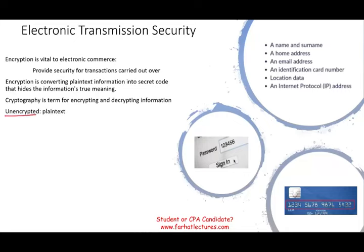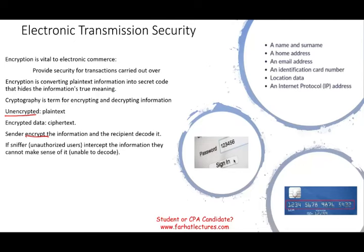Plain text is called un-encrypted — it's what you see in front of you. When text is encrypted, it's called cipher text. Those are technical terms. So the sender encrypts the information and the recipient decodes it. When you send this information over a public network like the internet, there's a risk. A sniffer is a person in between — between you and the recipient — who may intercept the information.